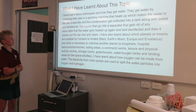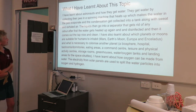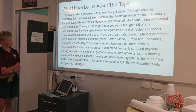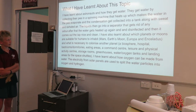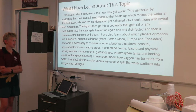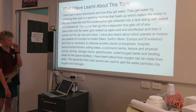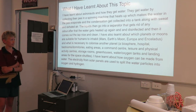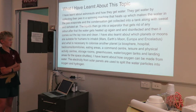What I've learnt about the stuff. I've learnt about astronauts and how they get water. They get water by collecting their pee in a spinning machine that heats up, which makes the water evaporate, and condensation gets collected into a tank along with sweat and extracts.